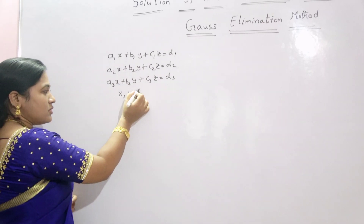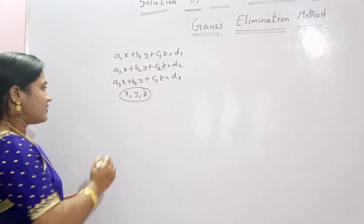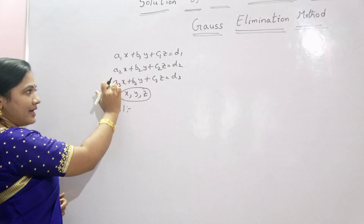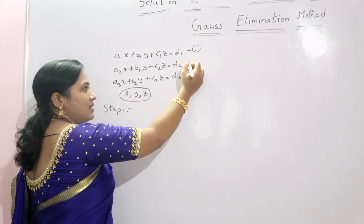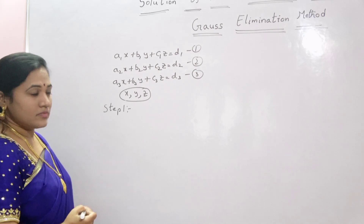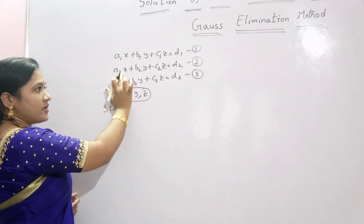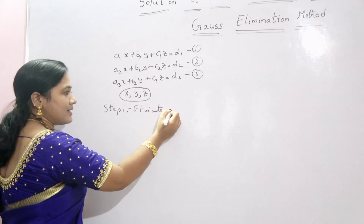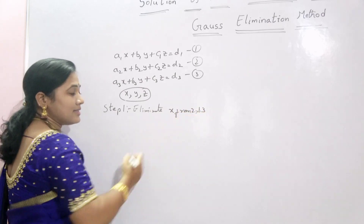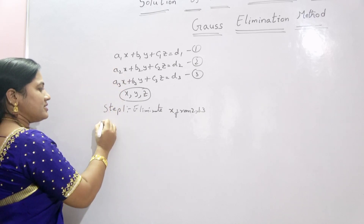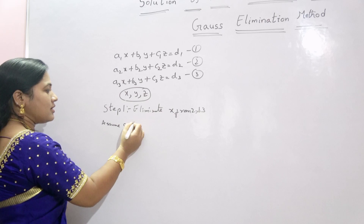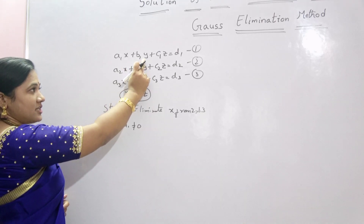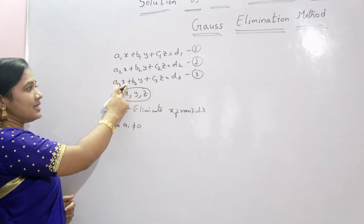So to find the solution — the values of x, y, z — what we have to do is: Step 1 is to eliminate x from the second and the third equations. This is equation 1, equation 2, and equation 3. Assume a1 is not equal to 0, and by using the first equation, eliminate x from the second and the third equation.